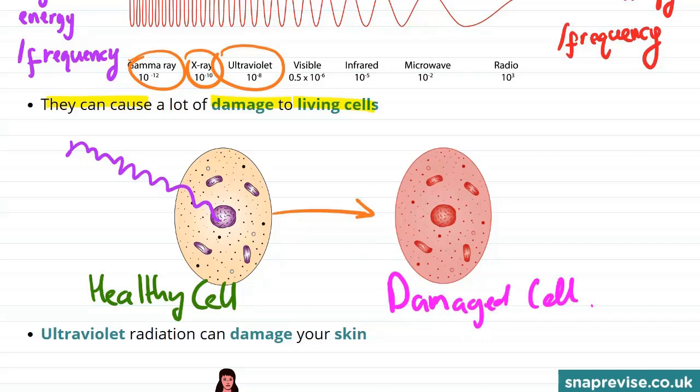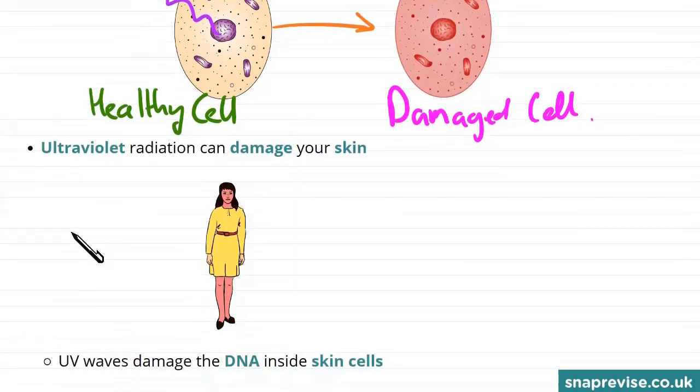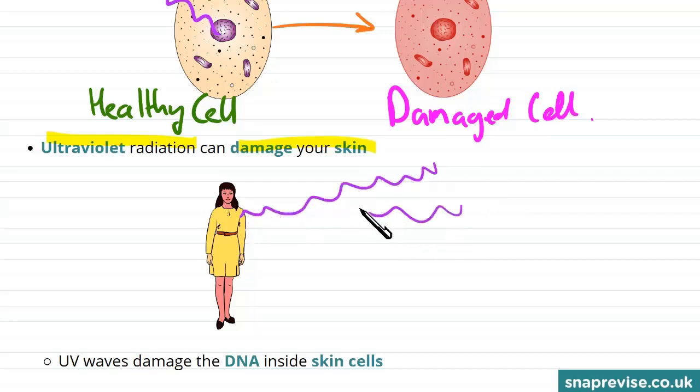So here's an example you may have very much come across yourself. Ultraviolet radiation can damage your skin. So if we spend a day in the sun we might find that we end up absorbing too many ultraviolet rays. And this can lead to sunburn. So here we have a person who is unfortunately sunburnt.